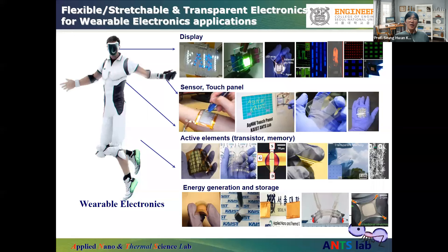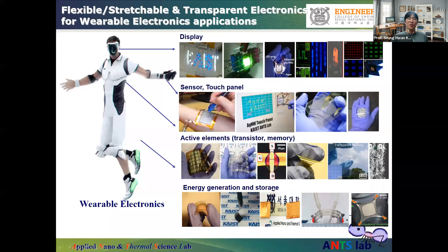To realize wearable electronics, four components must be realized in flexible or stretchable form: information display, information input devices such as keyboards or touch panels, information processing devices such as transistors and memory, and energy generation and storage devices. Twenty years ago the objective was flexible electronics, ten years ago it shifted to stretchable electronics, and now the objective is to make all electronics transparent and flexible or stretchable.